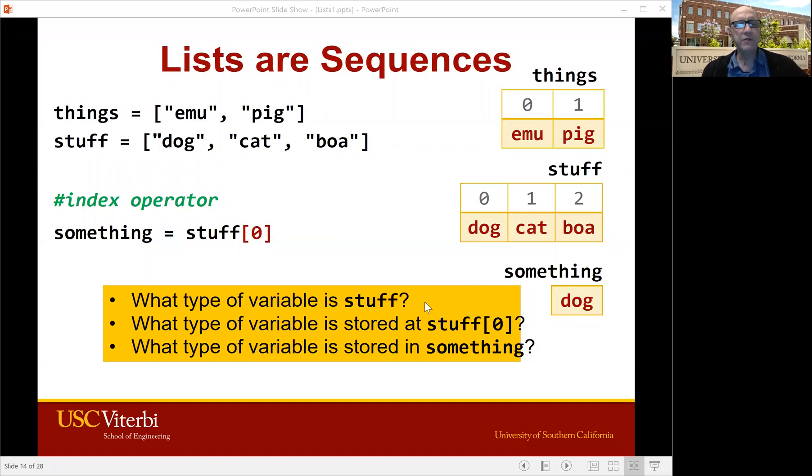And we have to watch out for types. Stuff is a list of strings. So stuff bracket zero is one of those, just a string. And so something is also just a string. It's not a list anymore, it's a string.